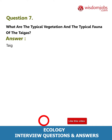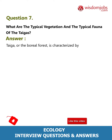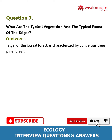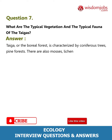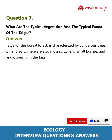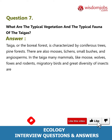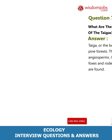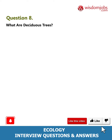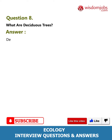Question 7: What are the typical vegetation and the typical fauna of the taiga? The taiga, or boreal forest, is characterized by coniferous trees and pine forests. There are also mosses, lichens, small bushes, and angiosperms. In the taiga, many mammals like moose, wolves, foxes, and rodents, migratory birds, and great diversity of insects are found.